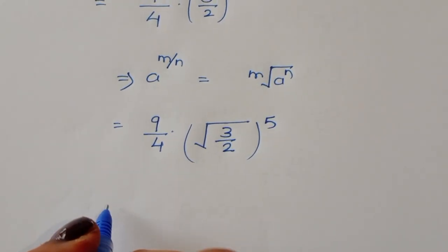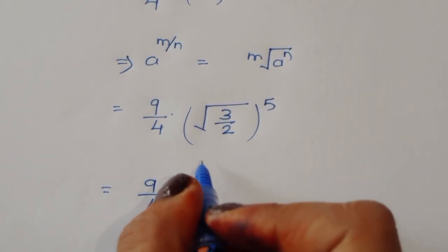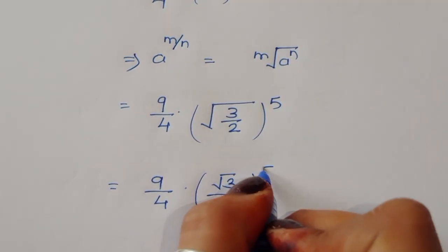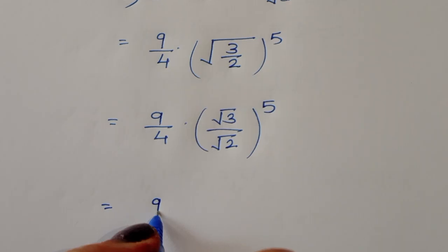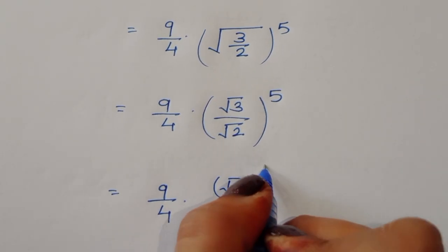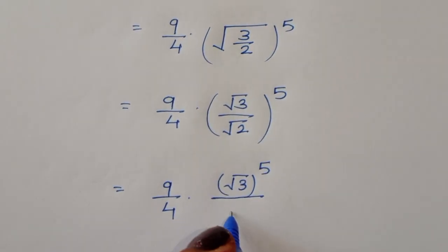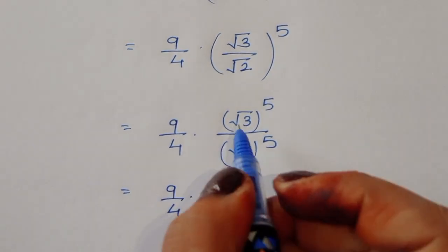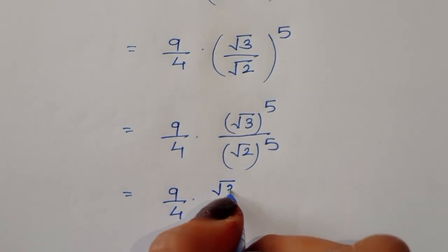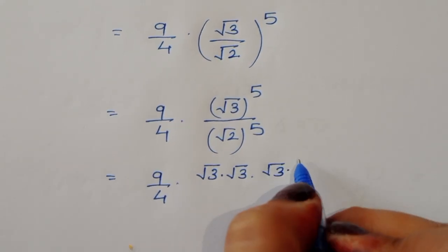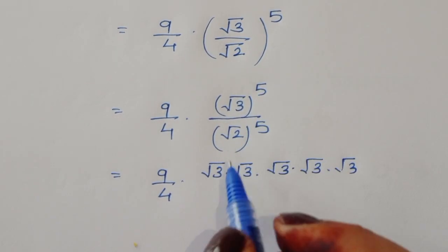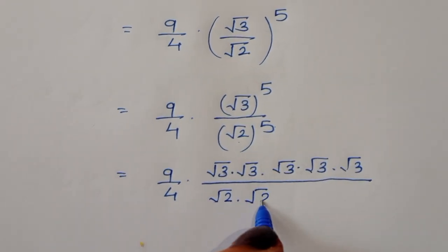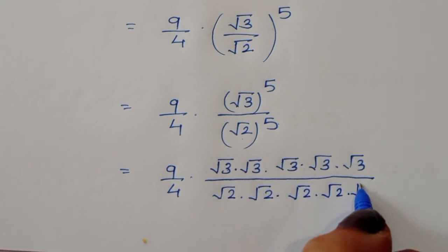Now we separate the square root: square root of 3 divided by square root of 2, all to the power 5. We expand (3/2)^5 inside the square root as square root of 3^5 divided by square root of 2^5.